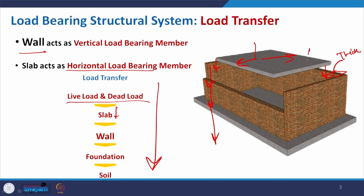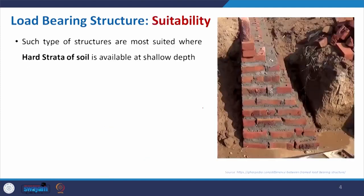This is the gravity load — the load acting towards gravity. Along with that, there are wind pressure and other things, so those lateral loads are also taken care of by the wall as the main structural supporting member. This is the feature where the wall acts both for taking the lateral load as well as the axial or gravitational load.